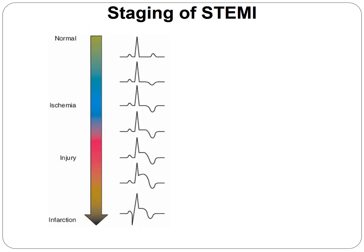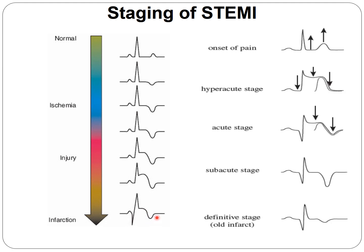Staging of STEMI on ECG: normal shows a normal R-wave, isoelectric ST segment, and positive T-wave. In ischemia, the T-wave first flattens and turns negative — increasingly deeper — while the ST segment starts to elevate. When necrosis develops, a Q-wave, ST elevation, and T-wave inversion are the signs.